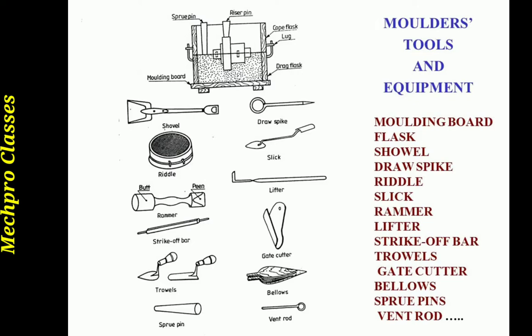You can find the gate cutter and the bellows, as I already discussed, for blowing extra parting sand out of the cope and drag. So just go to the theoretical part — the introduction to casting — and you will find the theoretical portion. Then come to this video to easily understand the different tools and equipments for casting purposes.